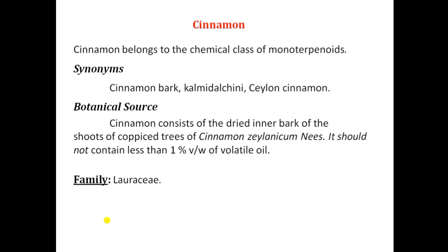It is very important to note that there are two species of cinnamon. One is called as Ceylon cinnamon and the second is called as Cassia bark. Here we will discuss Ceylon cinnamon, which is called Cinnamomum zeylanicum. It is not the outer bark — it is the inner bark of shoots of coppiced trees of Cinnamomum zeylanicum. The biological source should not contain less than 1% of volatile oil and it belongs to the family Lauraceae.